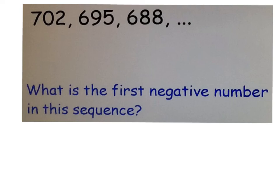So there's lots of different ways you could have gone about this one. I hope you didn't try this, which is going 688 and taking away 7 to get to 681 because it could have been very, very long and slow, 674 and so on and so on.